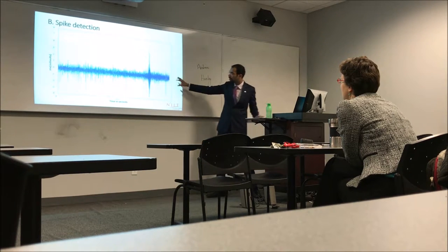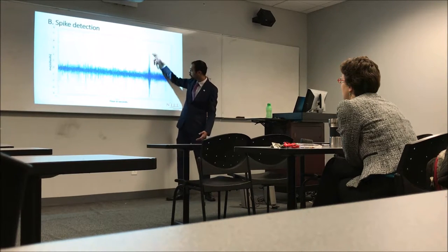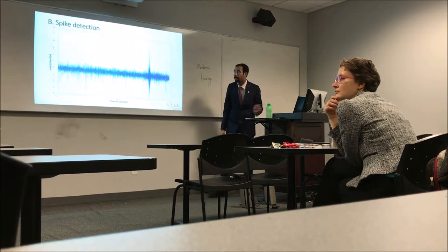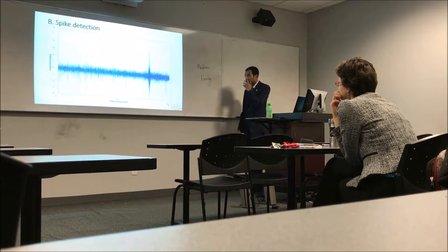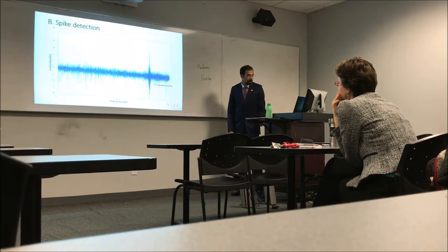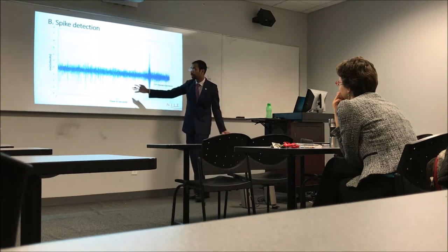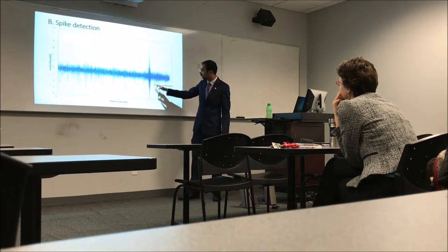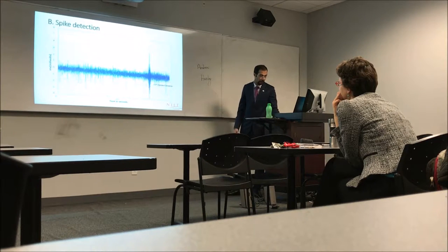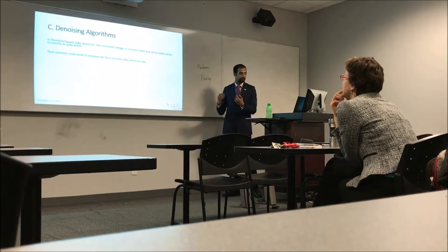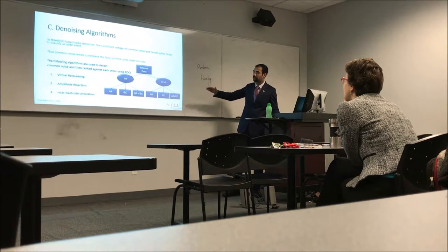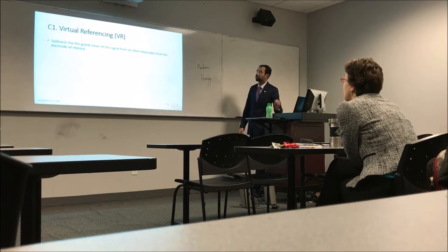As an example, a normal signal section looks clean, but here there is common noise. We can assume the threshold-crossing events here are neural activity, but at the noisy region we can clearly say it is not neural activity — yet it still gets detected. The majority of spikes are negative, so I use a negative standard deviation threshold. This illustrates the problem with simple amplitude thresholding for spike detection — there was a need for a denoising algorithm. I'm using three approaches: virtual referencing, amplitude rejection, and inter-electrode correlation.